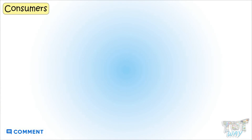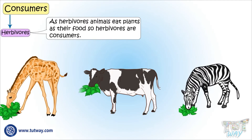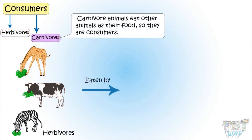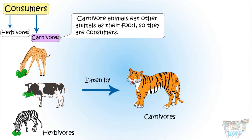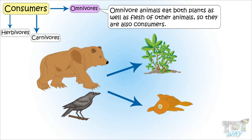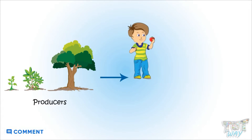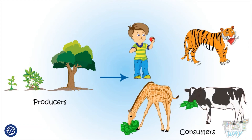Now let's see what are consumers. All parts of plants are used as a source of energy by herbivore animals, as herbivore animals eat plants as their food. So herbivores are consumers. And these herbivore animals are eaten by carnivores. Carnivores eat other animals as their food, so carnivores are also consumers. Omnivore animals eat both plants as well as flesh of other animals, so omnivores are also consumers.